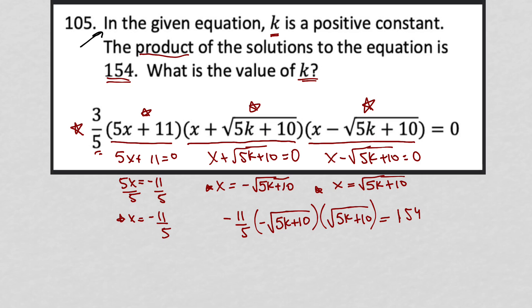Simplifying this further, I'm going to just get rid of the negatives because negative times negative is positive. I can then also say that square root 5k plus 10 times square root 5k plus 10 just removes the root and consolidates this into just 11 over 5 times 5k plus 10.